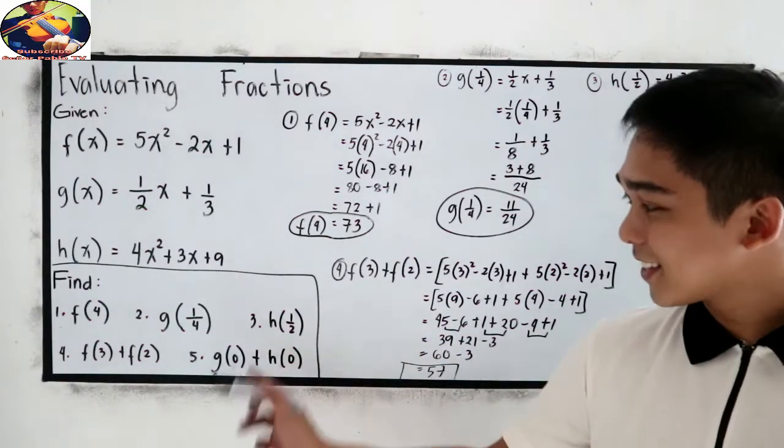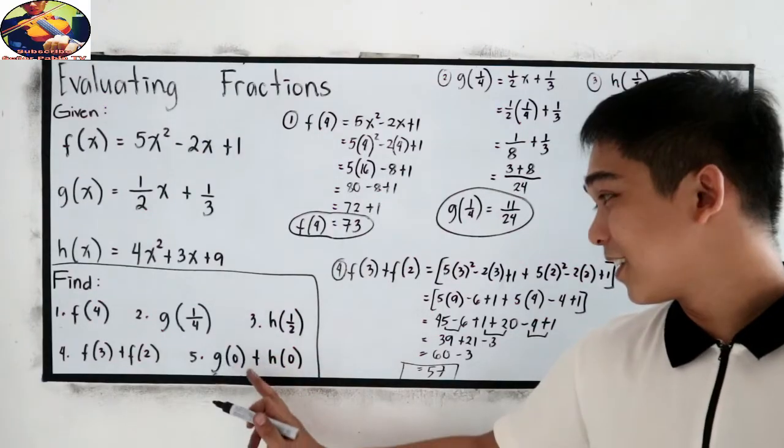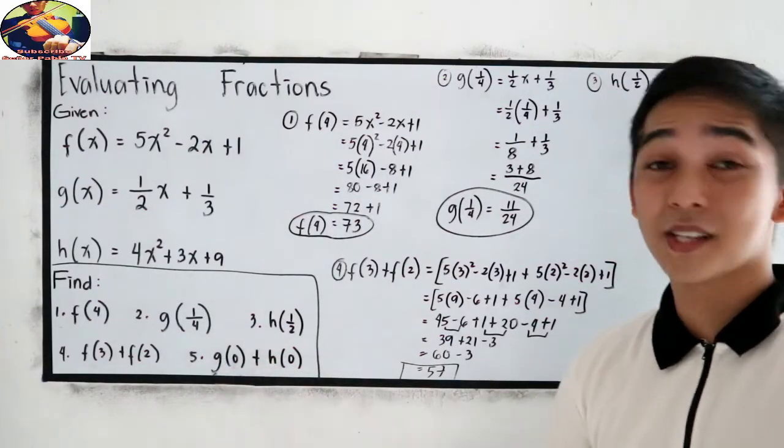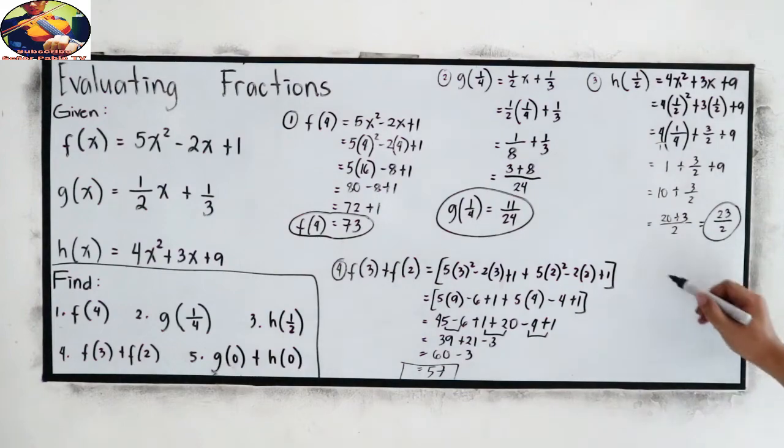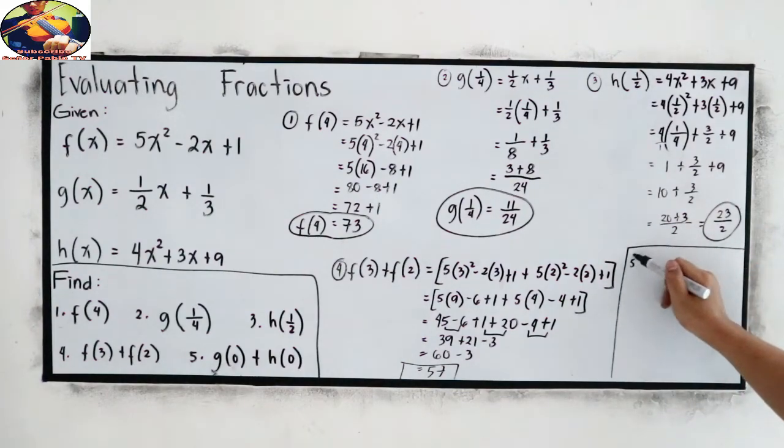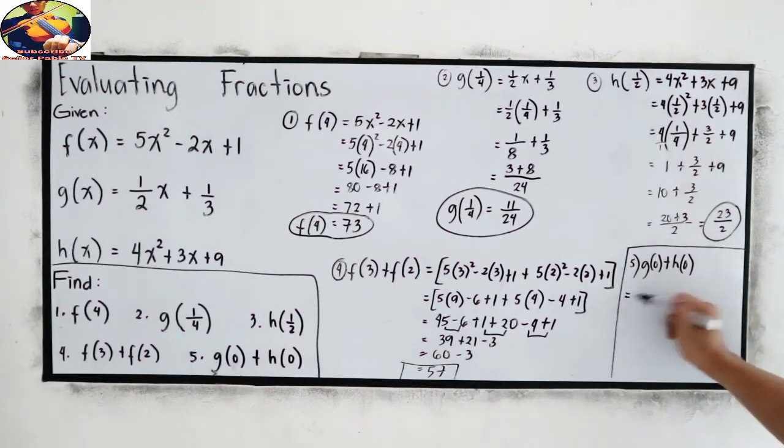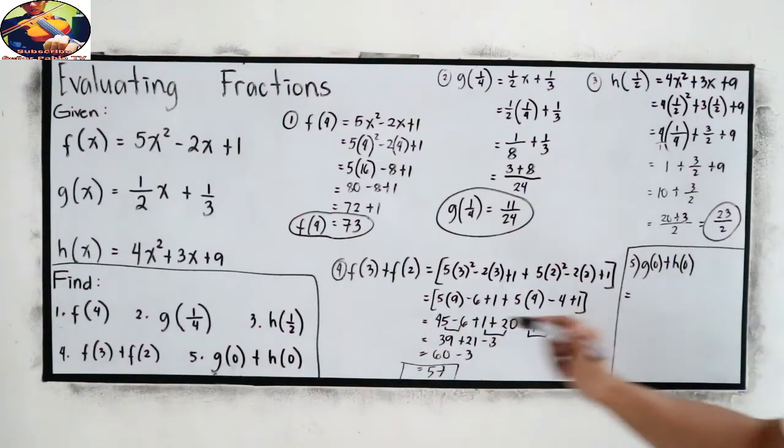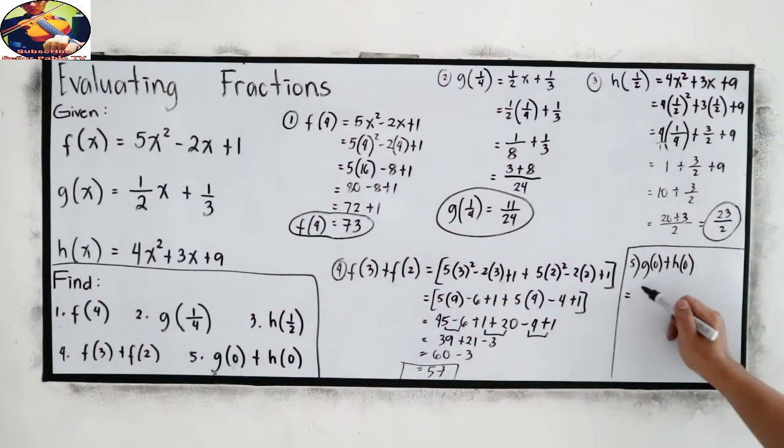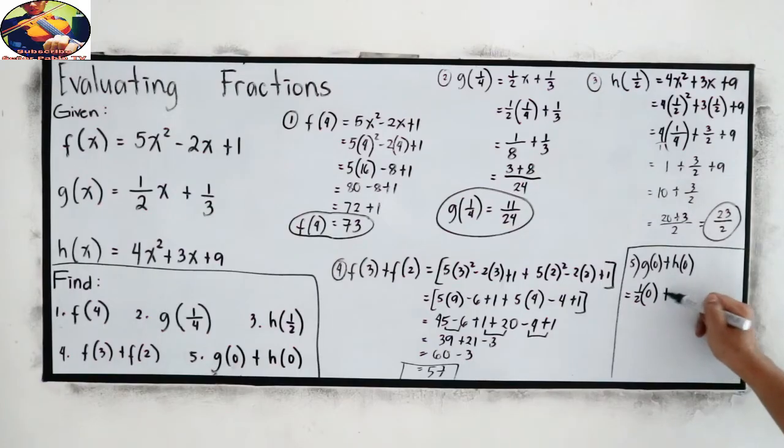And our last number, g of 0 plus h of 0. For number 5, g of 0 plus h of 0. I mean, right here. So, g of 0, g of 0. So, 1 half, our x is 0, plus 1 third.